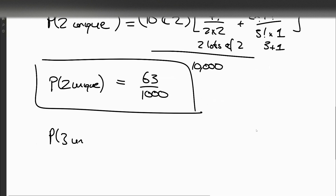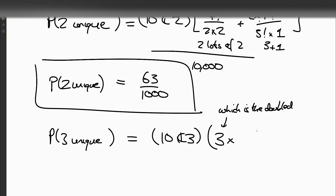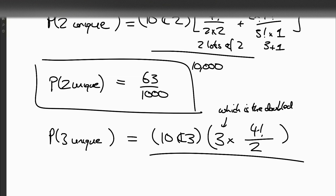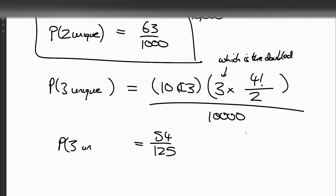So now let's have a look at the probability of getting three unique. We can get ten choose three to pick out our three digits. But then the only way of getting this is to have one lot of two and two lots of one, so we've got to pick our lot of two — there are three ways of choosing which is the doubled one. And then we need to permute them, so four factorial, but the doubled one can't be permuted, so we divide by two. We divide this by our ten thousand possible outcomes: ten choose three times three times four factorial divided by two, divided by ten thousand, and we get fifty-four over one hundred and twenty-five.